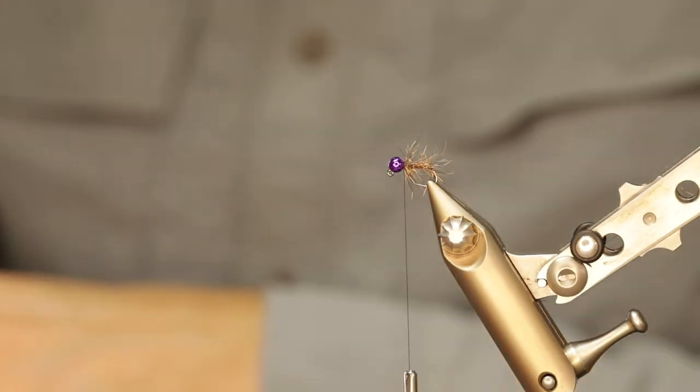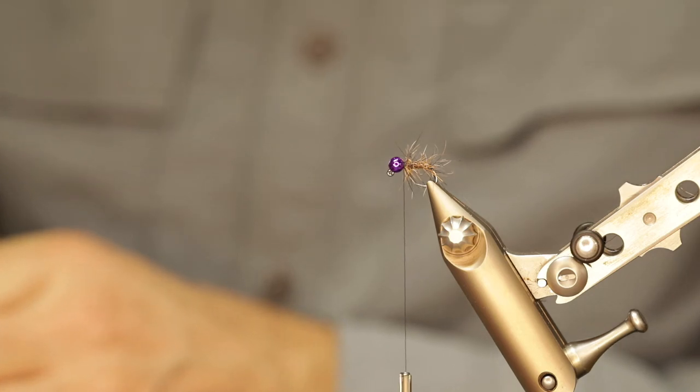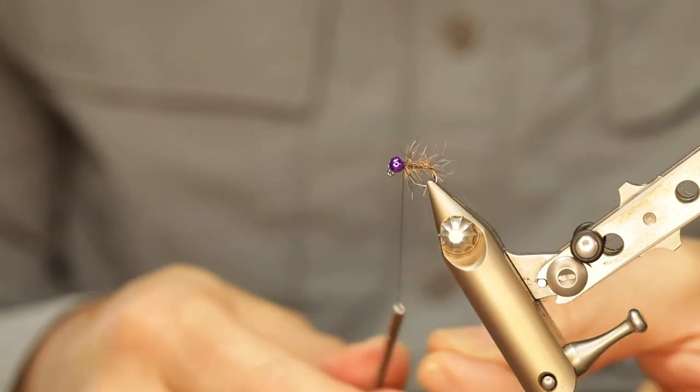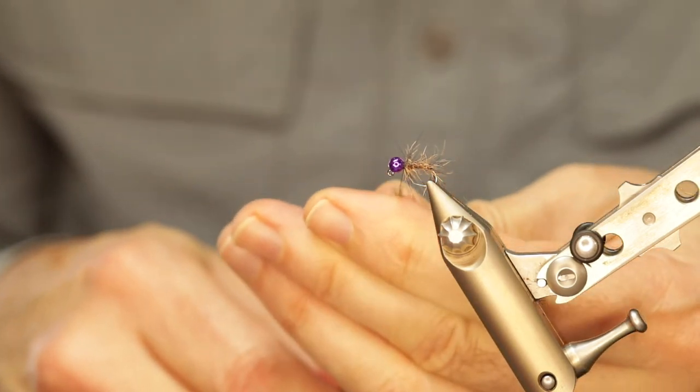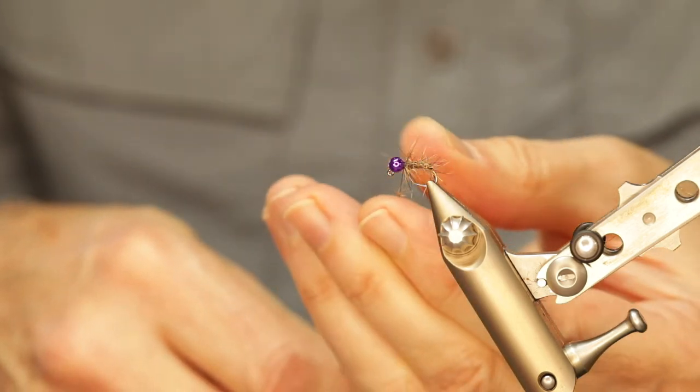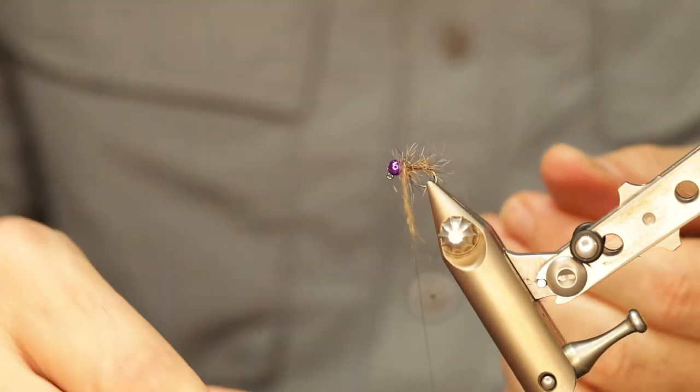Now it's time for the whip finish because the fly is pretty much done. You can if you like leave it at this point or you can add a little bit of extra dubbing around, just behind the bead of the fly. So it's up to you to decide how you want to finish it off. Sometimes I do, sometimes I don't. I'm just demonstrating doing this.